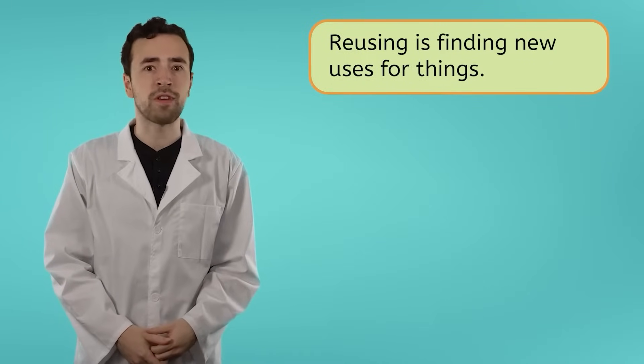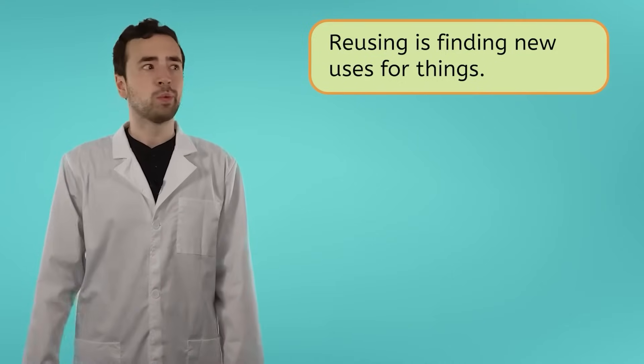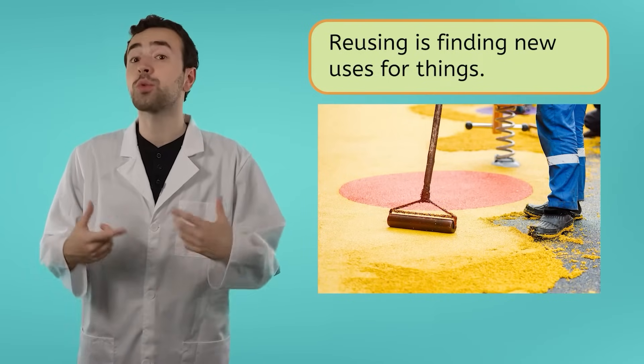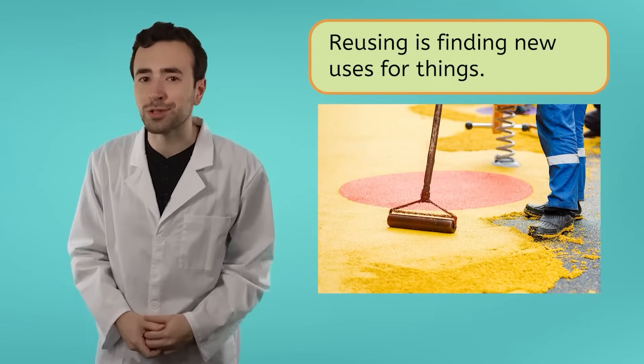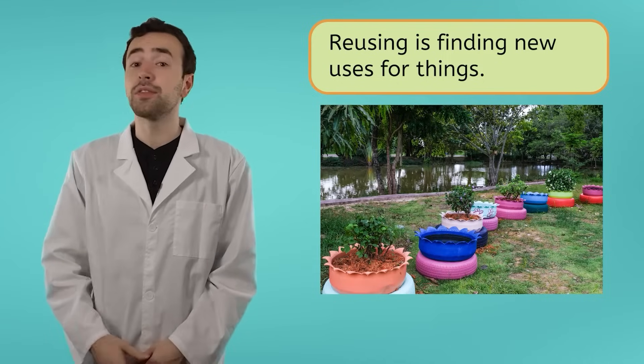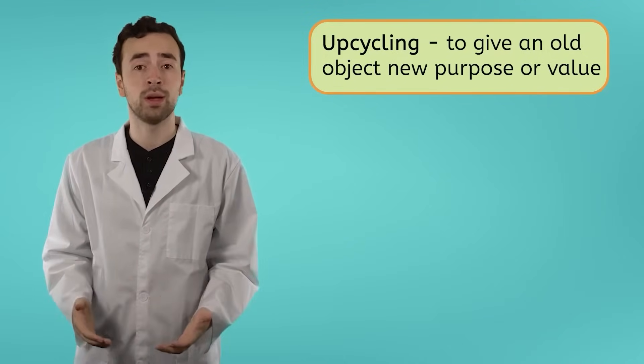Reusing can also mean finding new uses for things and giving them a second life. For example, once tires are too worn to be used on cars, they can instead be reused to make soft playground surfaces. Or those tires can be turned into planters like what I did, giving those tires a new use. You'll often hear this type of reuse called upcycling, which means to give an old object new purpose or value. People can get very creative with how they reuse items to prevent them from becoming waste.